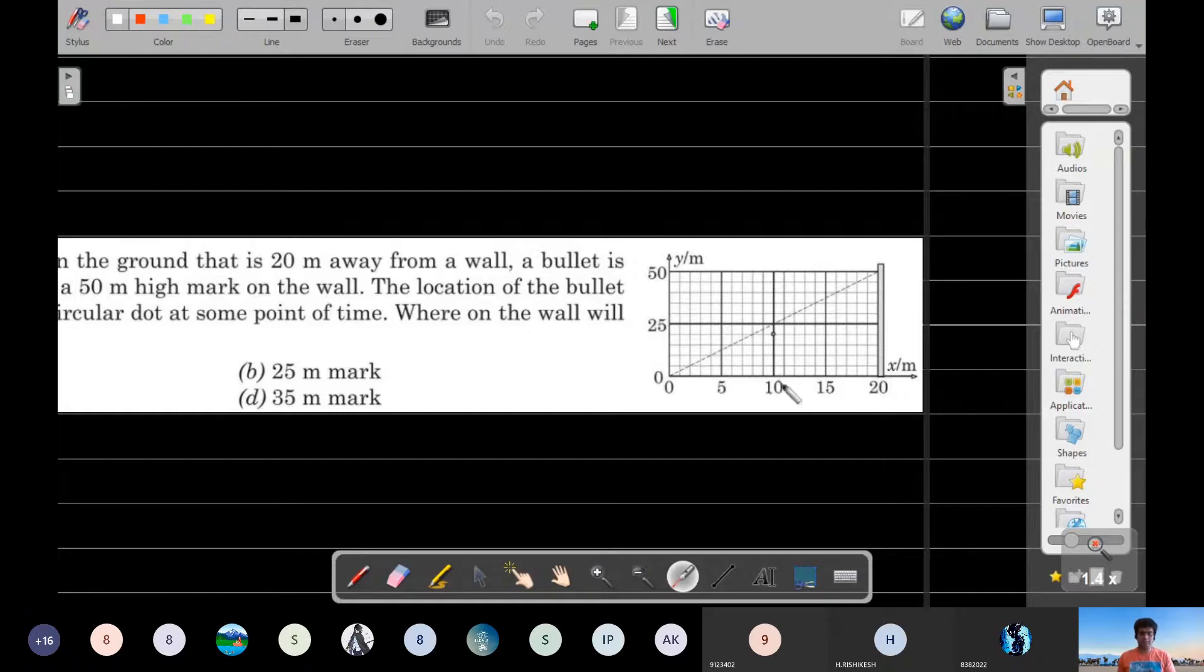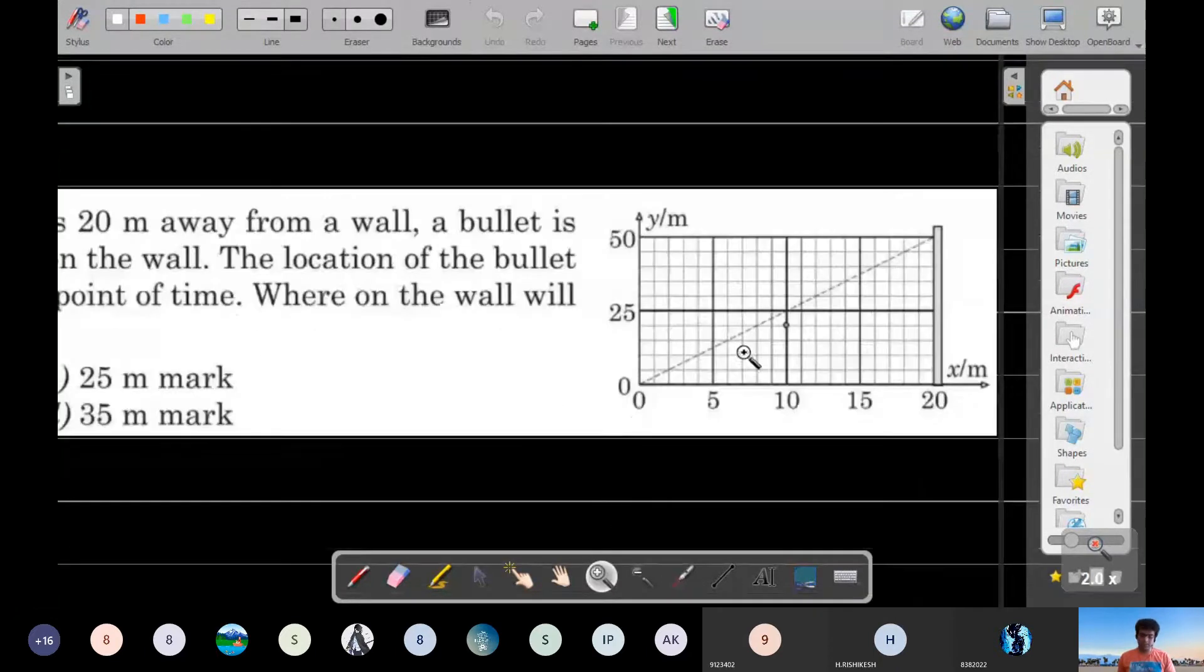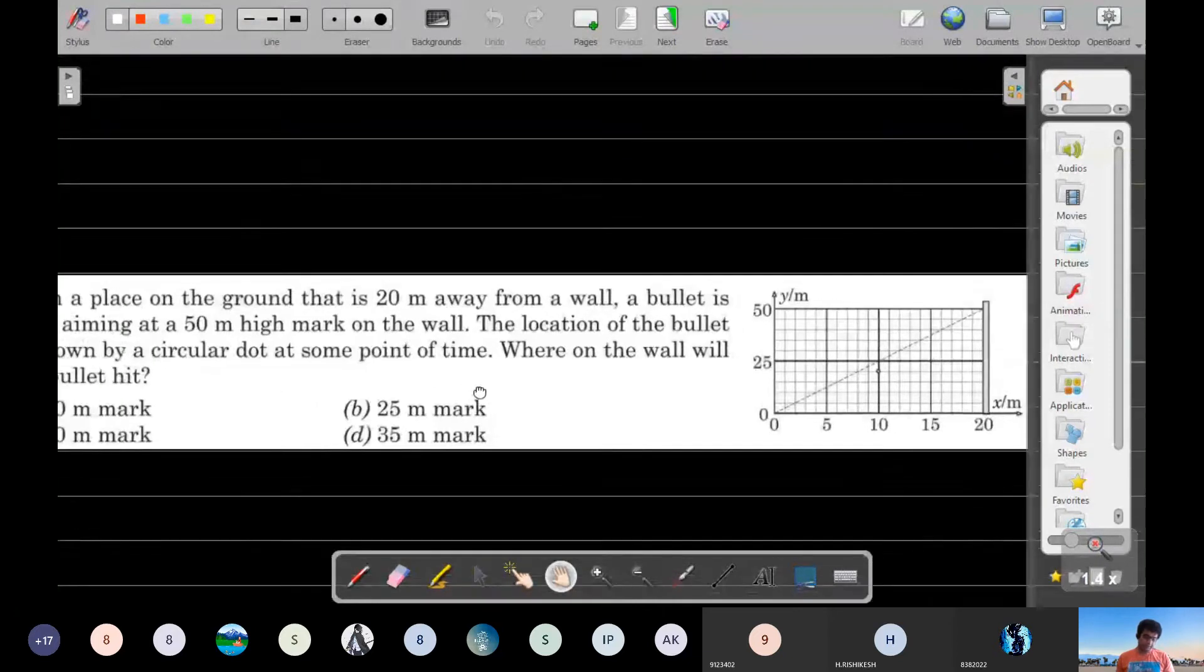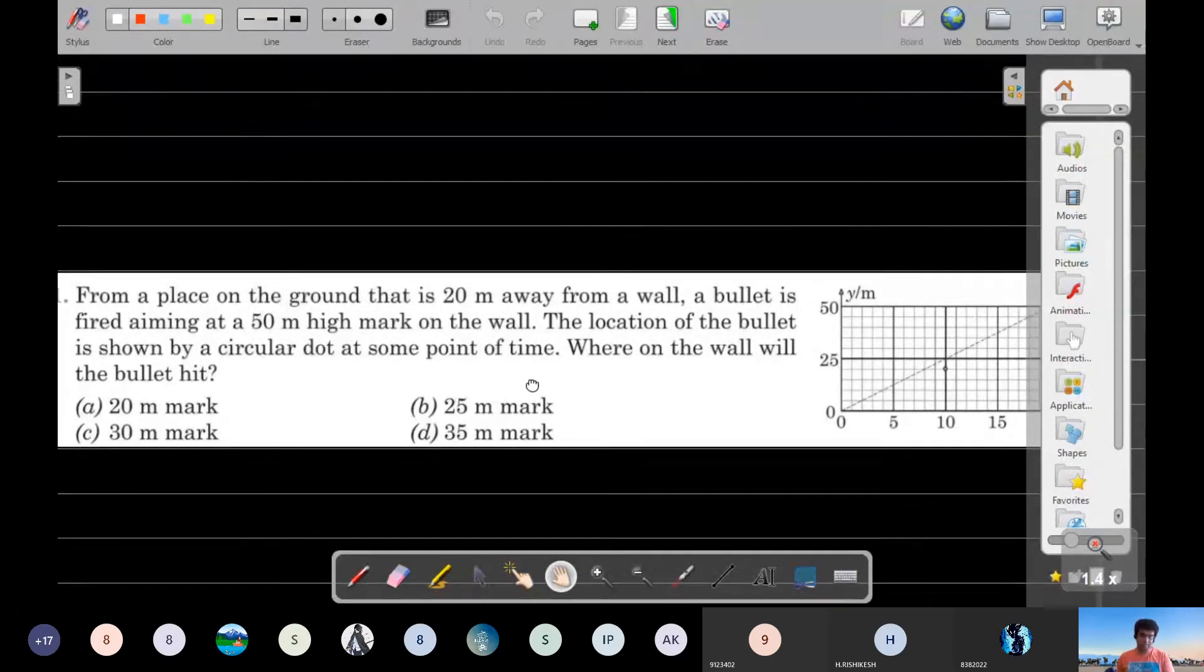The aiming is done along this dotted line. If it were a gravity-free space it would have actually gone along this particular dotted line. But as gravity would have its way, the bullet would actually hit somewhere below it because it bends down under gravity and the trajectory will not be a straight line, it would rather be a parabola. You are aiming at a 50 meter high mark at the top.